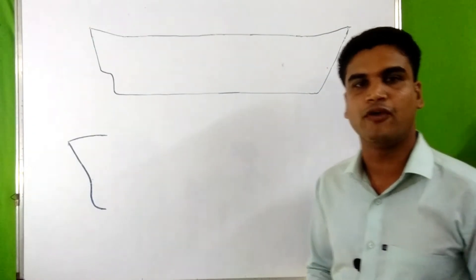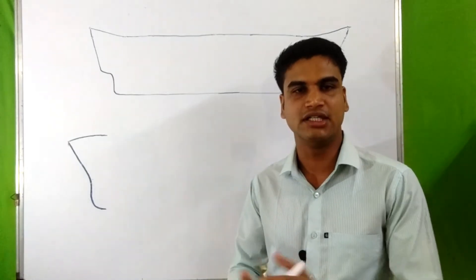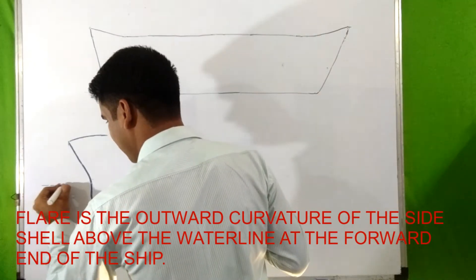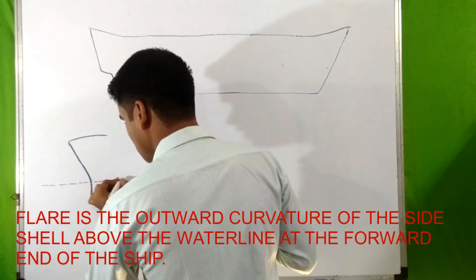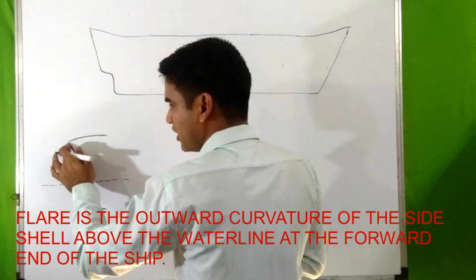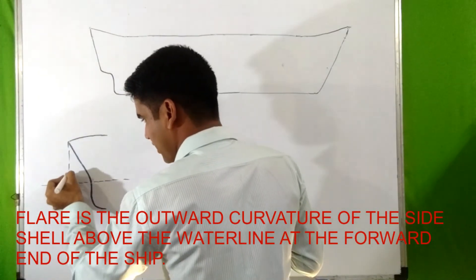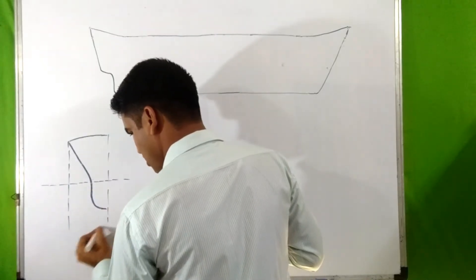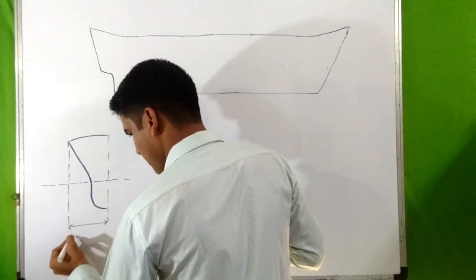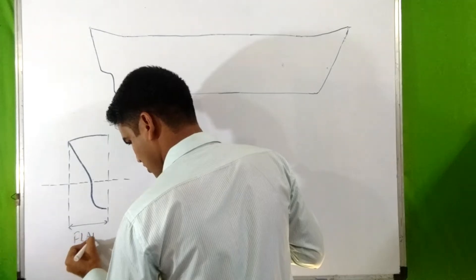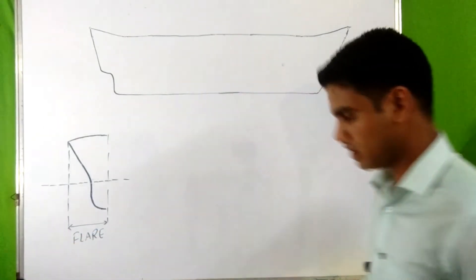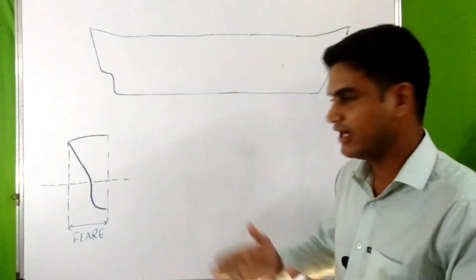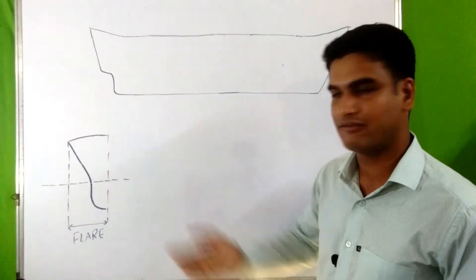Next is flare. Flare is the outward curvature at the forward end of the ship of the side shells above the water level. You can see this is the forward end of the ship and this is the water level — this outward curvature is known as flare.